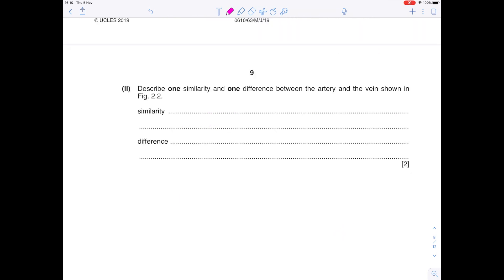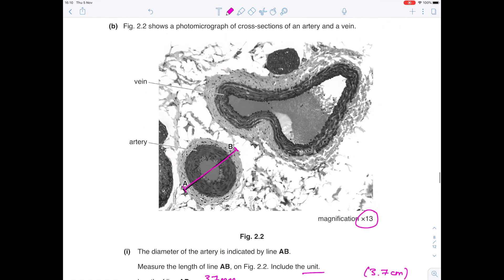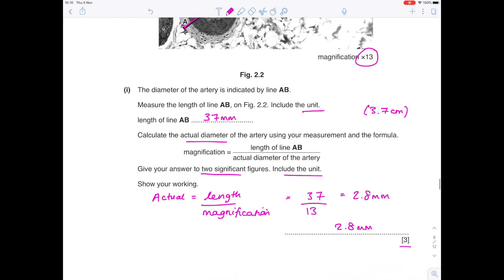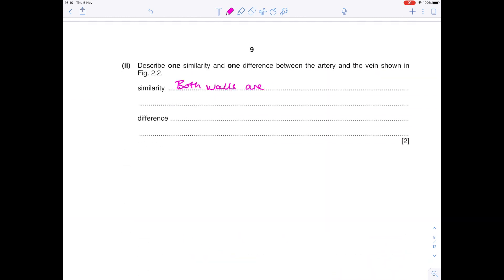Describe one similarity and one difference between the artery and the vein shown in Figure 2.2. Make sure you're stating something that you can see on the diagram. Well, you can see that they're both made up of many layers of muscle and elastic fibres. The biggest thing to notice in terms of their differences is the width of that lumen. It's huge in the vein and much smaller in the artery. So both walls are made up of several layers of muscle and elastic fibres. The difference is the width of the lumen. Veins have wider lumens.